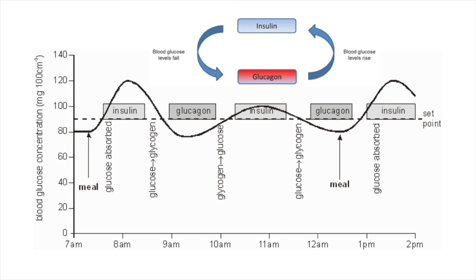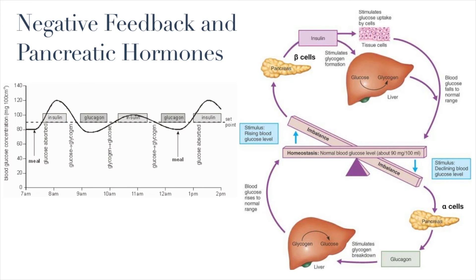Blood sugar levels cannot go back up unless you still have glycogen stores. Glucagon can only affect blood sugar levels if there's glycogen stored within your liver or your muscle cells. Let's take a look at each of those to show the negative feedback mechanism using a picture that summarizes both of these actions.